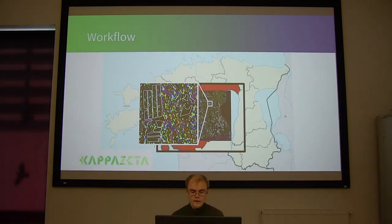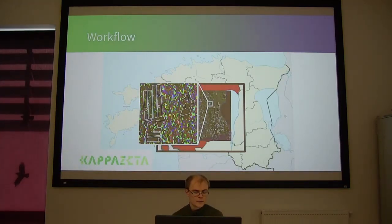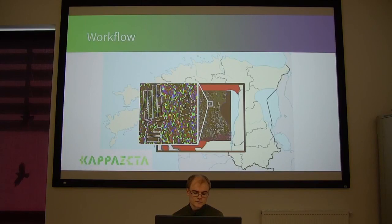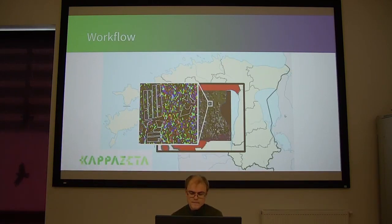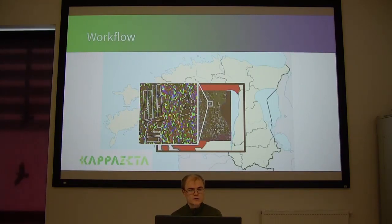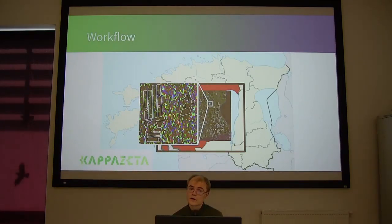In Estonia, the amount of parcels is in the order of 10 to the 5. But in principle, the same approach I'm going to show you works quite well for any size of images. So the total number of parcels for the whole of Estonia is in the order of 10 to the 5, which is 100,000.